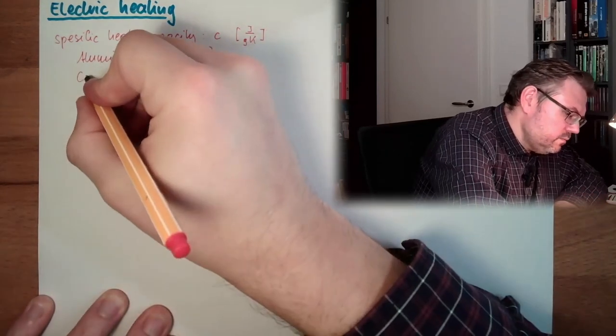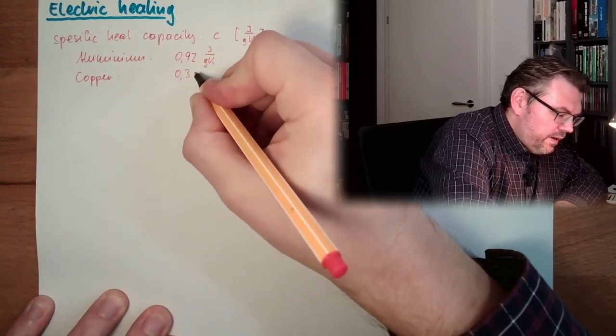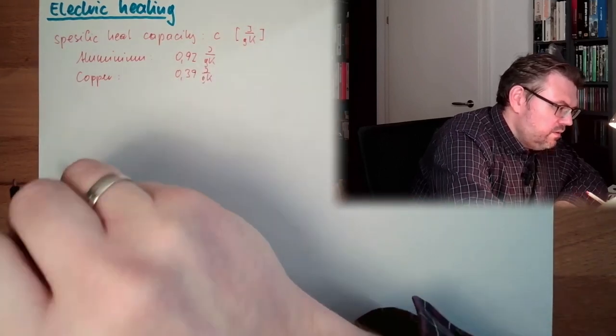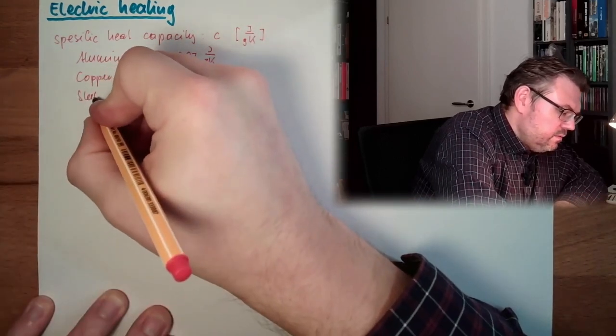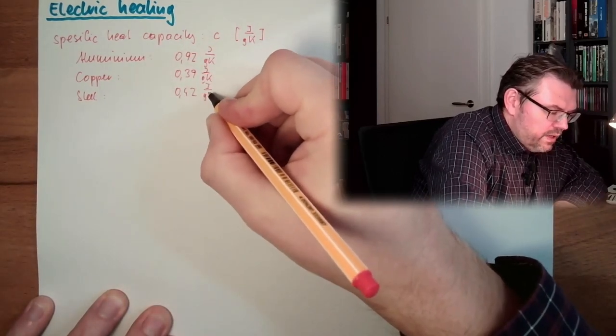Copper. We have 0.39 Joule by gram and kelvin. Steel. 0.42 Joule by gram and kelvin.